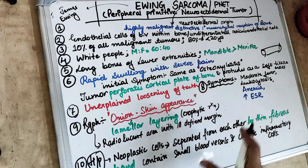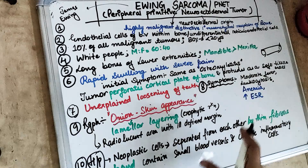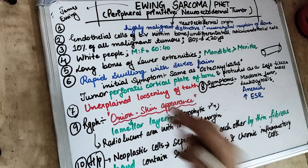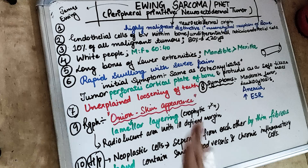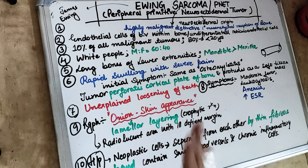Within the bone, there are blood vessels, and it is endothelial cell proliferation within these blood vessels that gives rise to this malignant tumor — the Ewing Sarcoma. It can also develop from undifferentiated reticuloendothelial cells, though this was the previous concept.